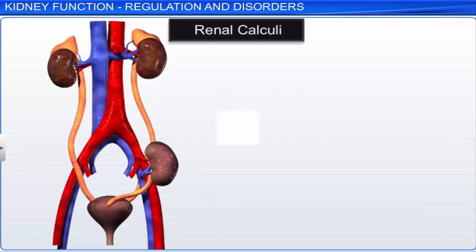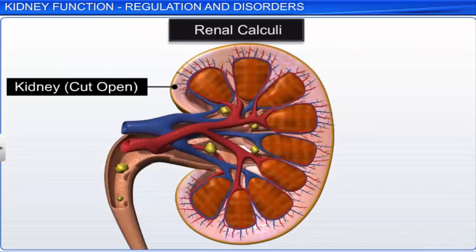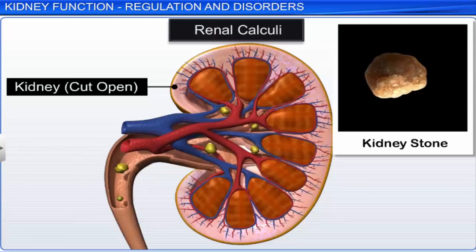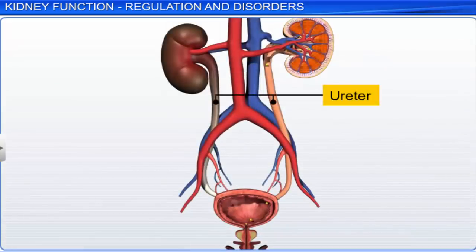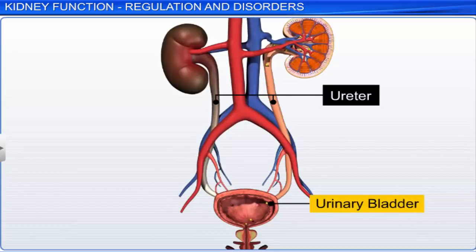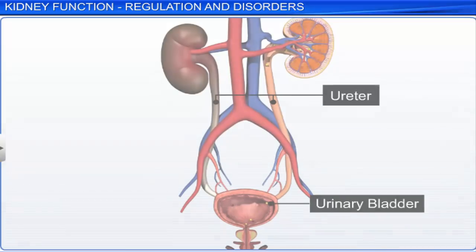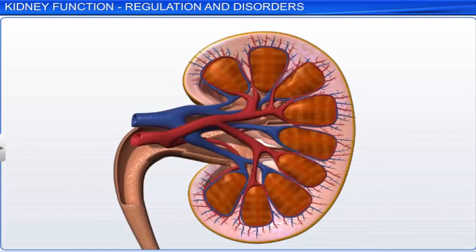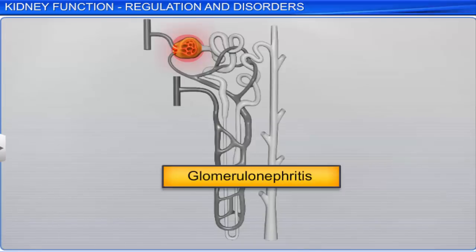Other disorders due to the malfunctioning of the kidneys include the formation of stones, or insoluble masses of crystallized salts within the kidney, a condition known as renal calculi. These stones are usually salts of calcium, mainly calcium oxalate or calcium phosphate. Such stones are also formed in the ureter and the urinary bladder. Another disorder affecting the kidneys is glomerulonephritis, wherein the glomeruli of the kidneys get inflamed.